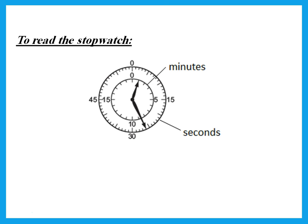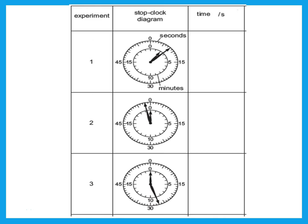You should know how to read a stopwatch. The inner circle is usually minutes and the outer circle is seconds. He usually wants you to record results in seconds. So one minute and 26 seconds becomes 60 + 26 = 86 seconds. For example: the first stopwatch reads 2 minutes and 8 seconds, which is 128 seconds. Experiment two reads 58 seconds — no minutes, so it is 58 seconds. The third reads 27 seconds.